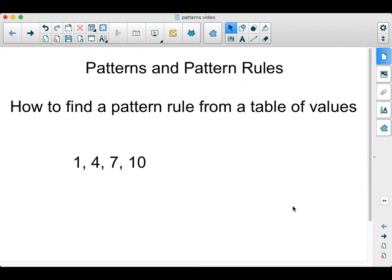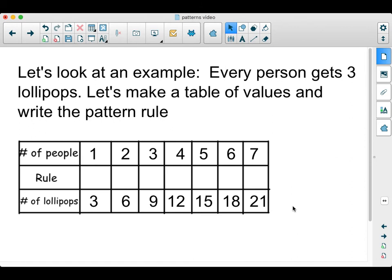In this edition of Math with McComish, we're going to go over how to find a pattern rule from a table of values. We've looked at using patterns with just numbers, where you would say the pattern is I'm starting at one and increasing by three each time. Now we're going to look at a table of values and how to get from one column or row to the other using a pattern rule.